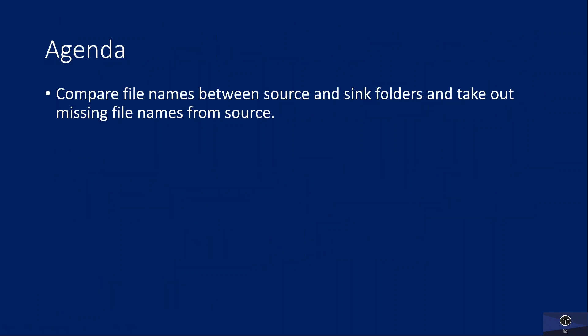Let's assume you have two folders — one is a source folder and another one is a sink folder. Let's say you want to copy files between them. If you have 100 files in the source folder and maybe 50 files already in the sink folder, I need to make sure which 50 files are missing in the sink so that I can copy only those 50 files. It's a comparison between source and sink to identify the missing files.